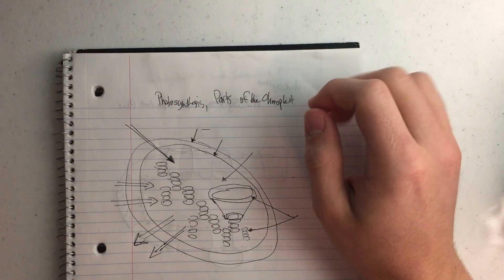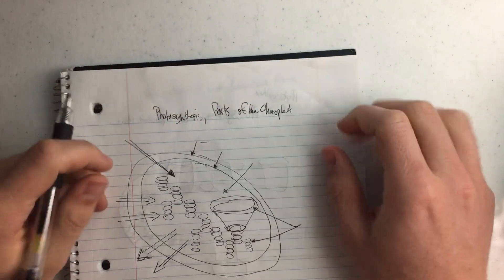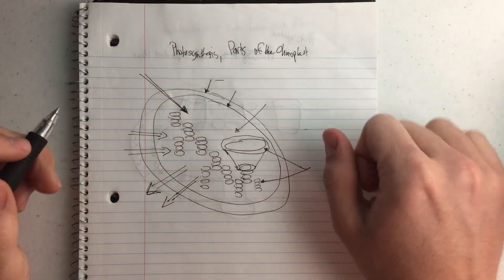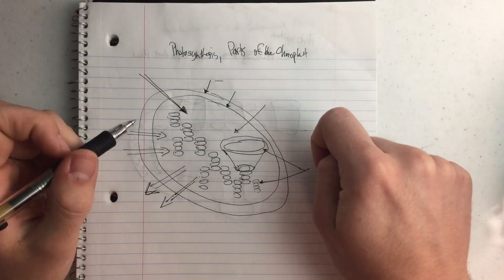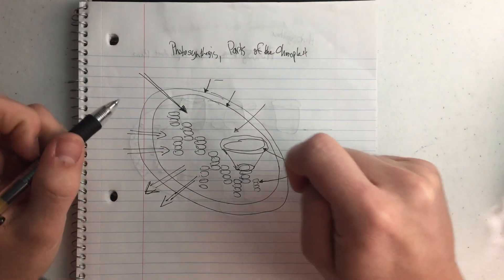Okay, so today I'm talking about photosynthesis, and to start the unit off I just want to talk about the parts of the chloroplast. We all know that chloroplast is the thing that makes energy for plant cells and carries out photosynthesis, but what are the parts of the chloroplast?